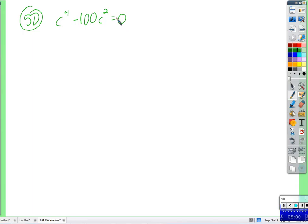C to the fourth minus one hundred c squared equals zero. Okay, so always factor out something they have in common. Do they have anything in common? C squared. So at least c squared minus one hundred. What do we have here? Difference of squares. You got a difference? You got two squares?